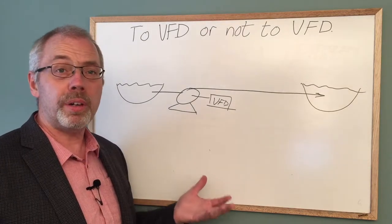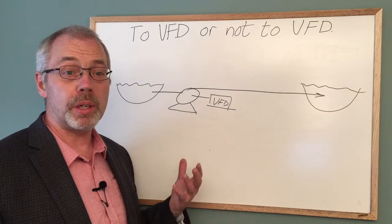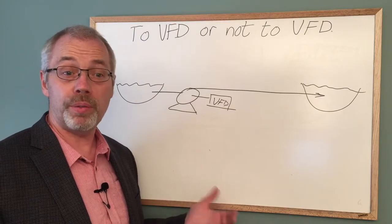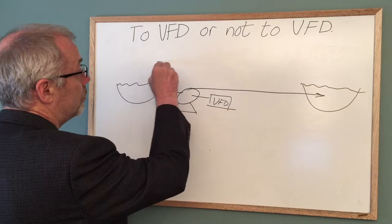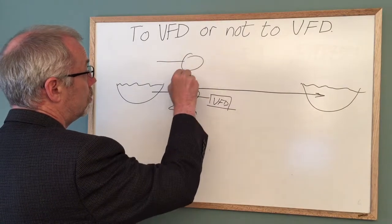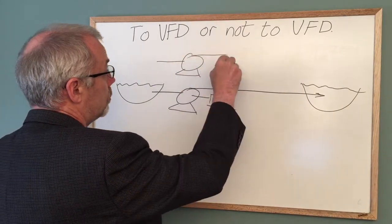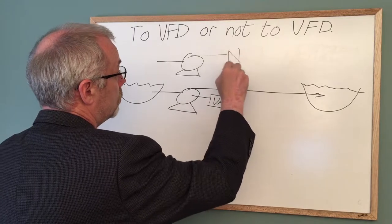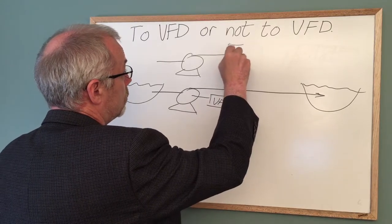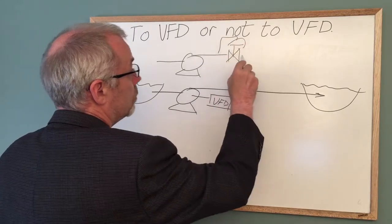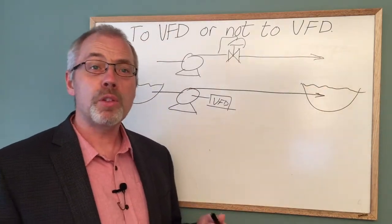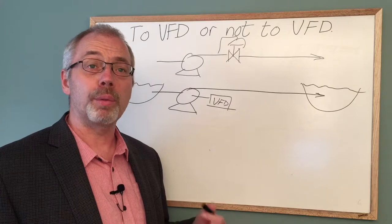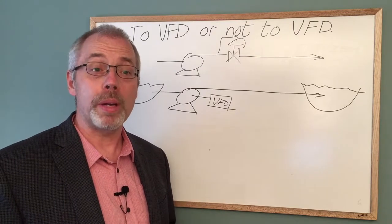Controlling the flow rate with the variable frequency drive requires less pumping power compared to a fixed speed pump and a control valve, and this is because the control valve requires a pressure drop and this wastes energy.